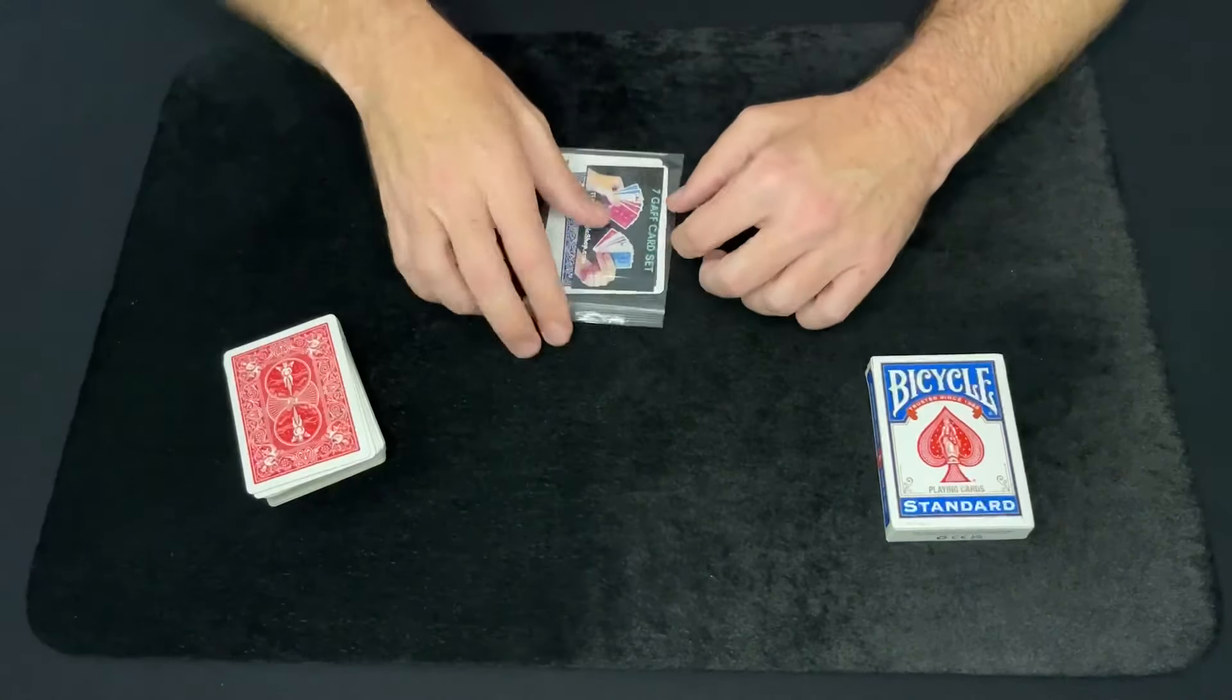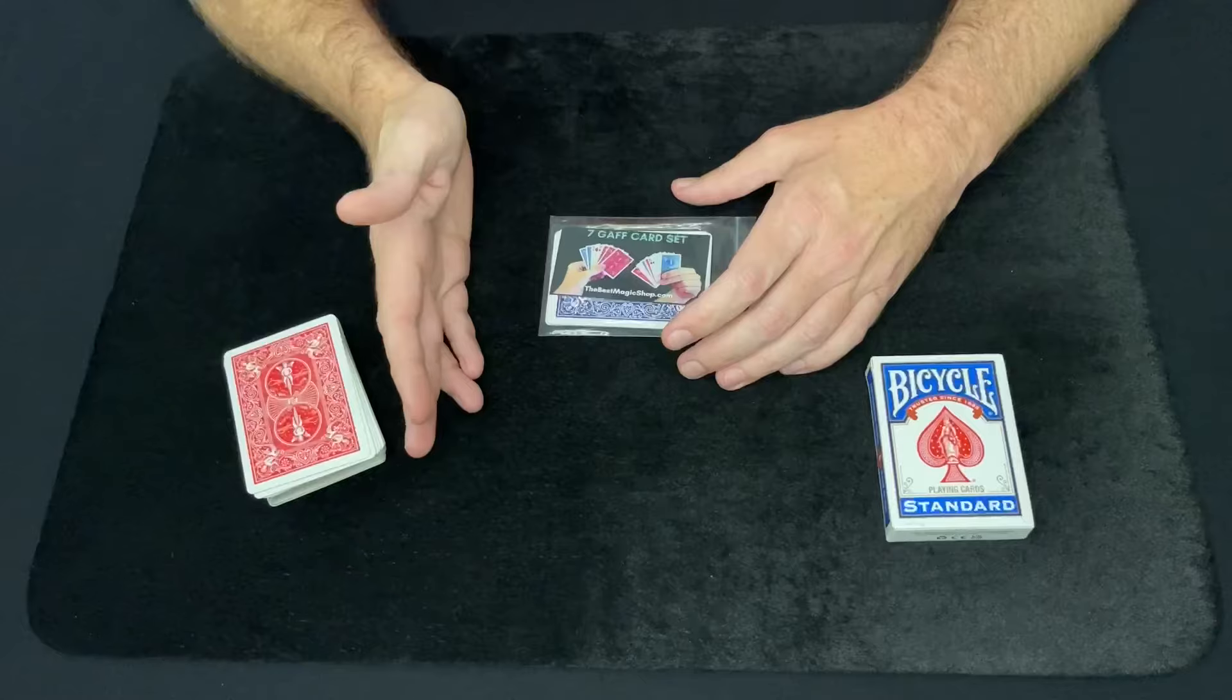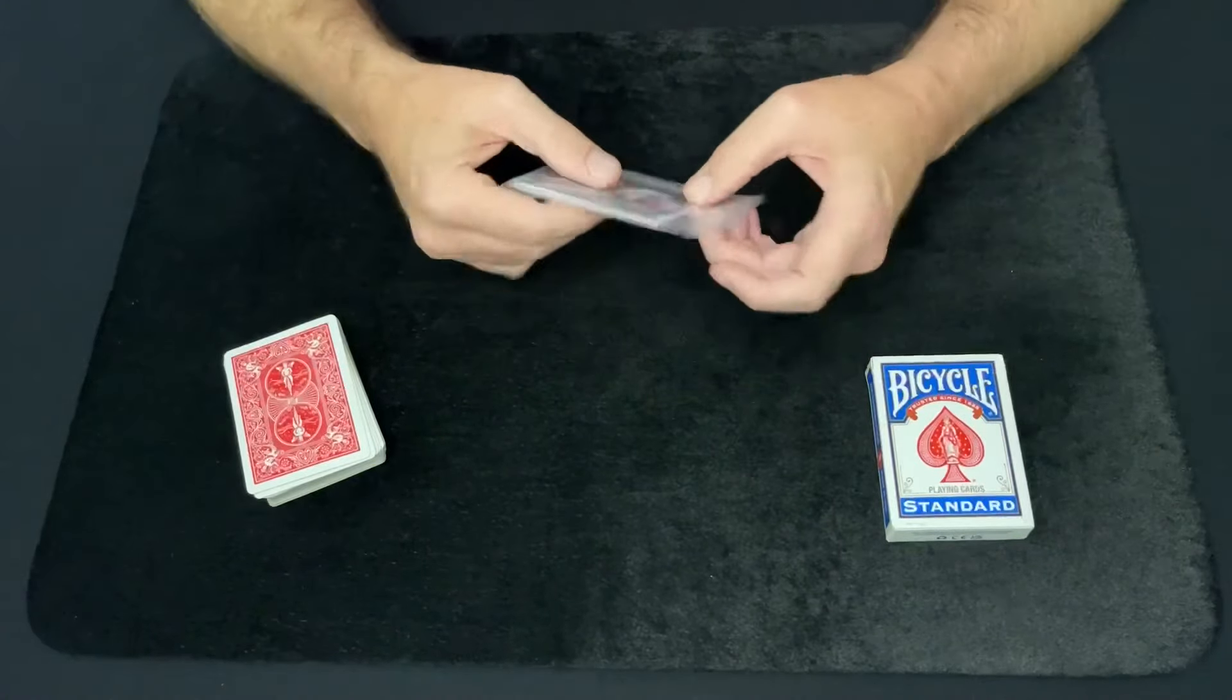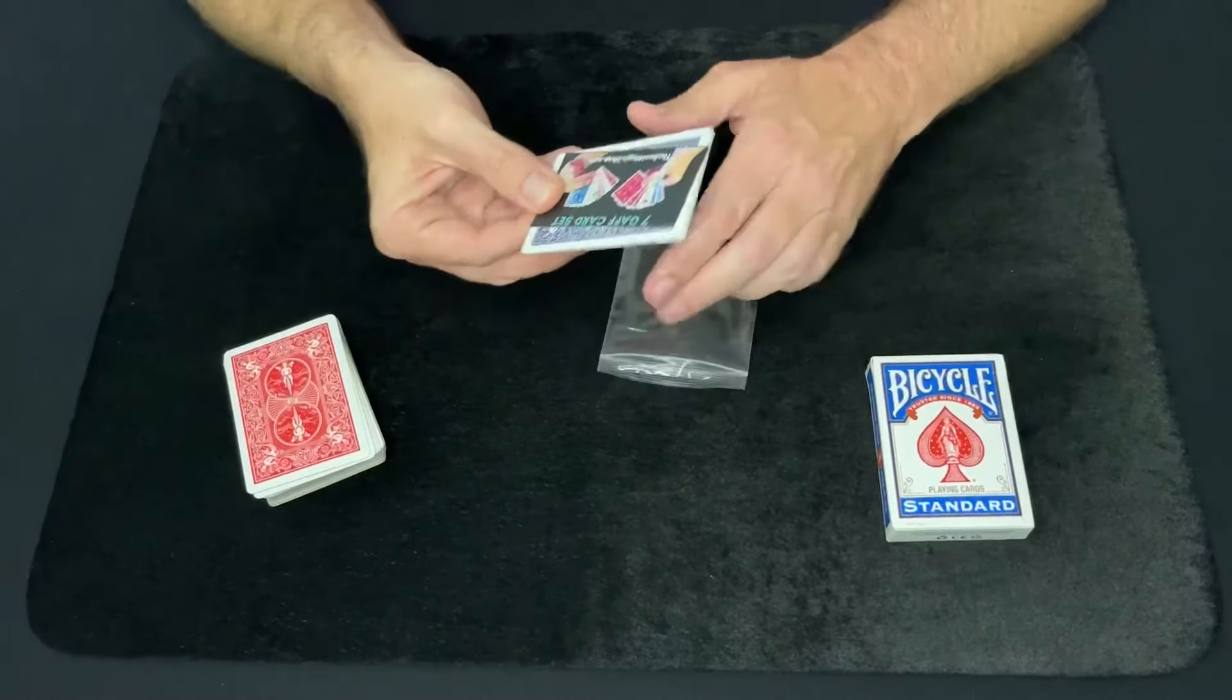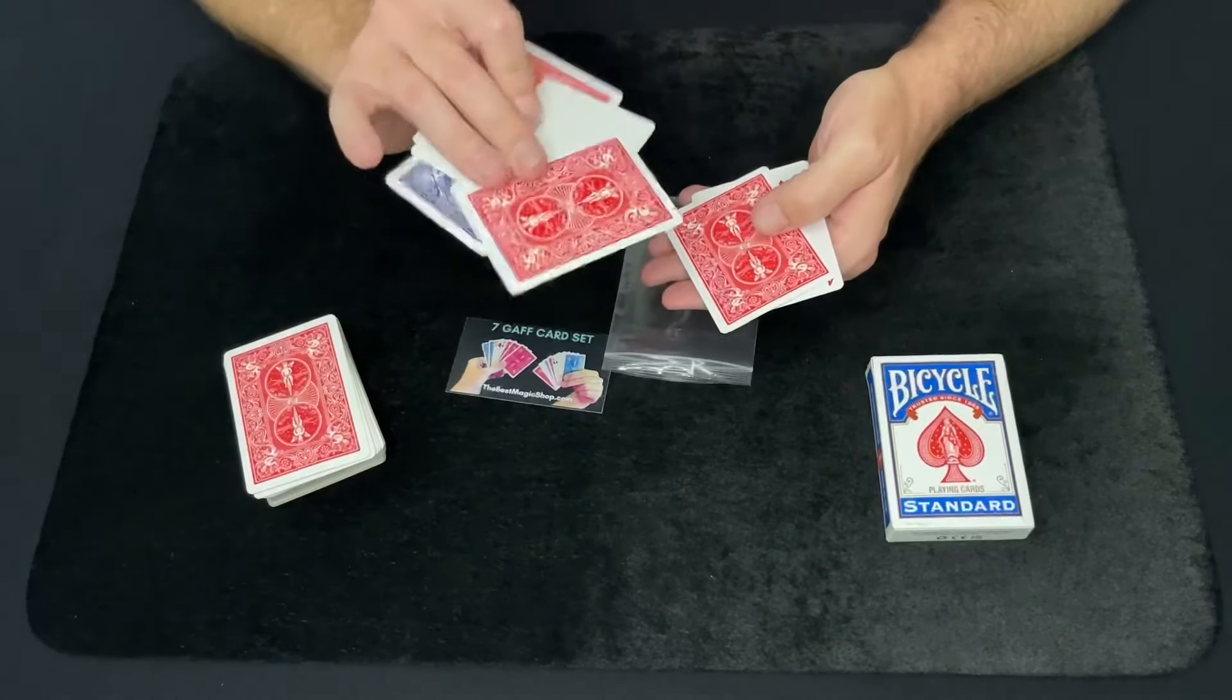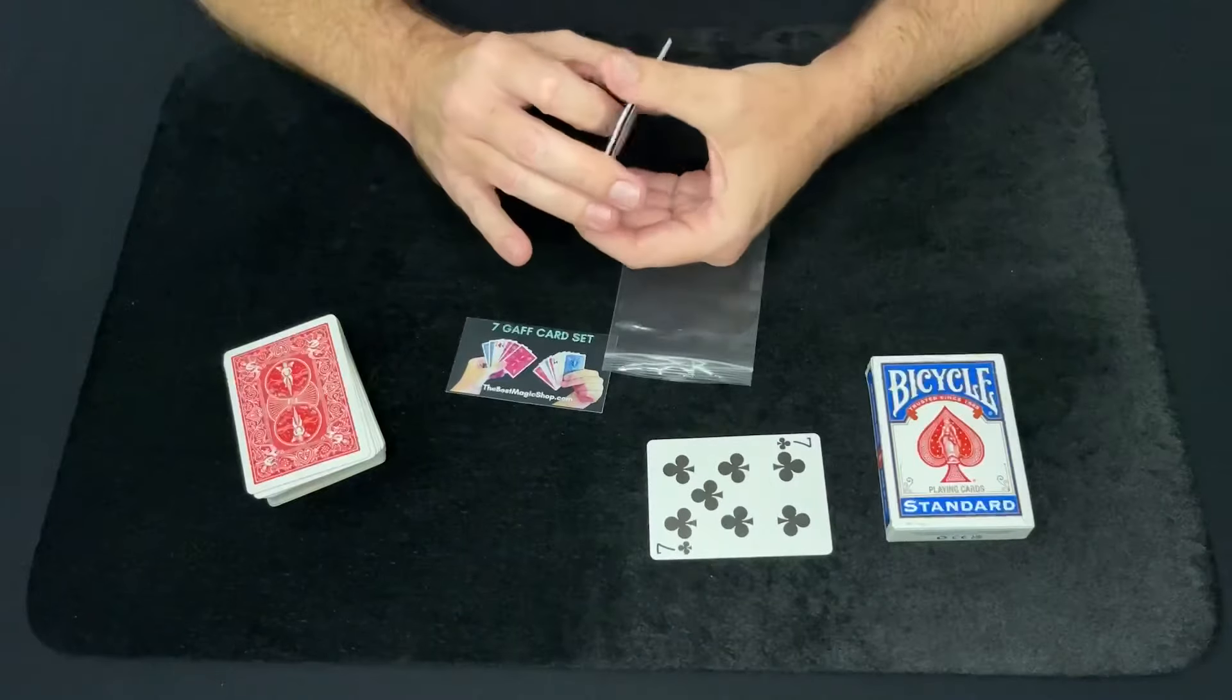But you are going to need a double-sided card. Now, if you have a double-sided card, great. You only need one, so you may have one lying around. Maybe at your local magic shop, they sell them individually. But you can also get a seven gaff card set, which has seven gaff cards in it total from thebestmagicshop.com. And it has a blue-blue, blue-backed, blank-faced, blue-red-backed, and then red-blank-faced, red-red double-backed, a short card, and then a double-faced card. You're going to need the double-faced card for this trick.